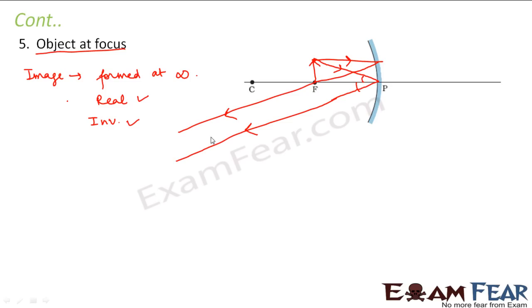The size of the image will be highly enlarged. If both rays would have met here the image size would be small, but the farther away they meet the larger the image. So in this case the image will be highly enlarged. To summarize: when the object is placed at the principal focus, the image is formed at infinity, it is real, inverted, and highly enlarged.